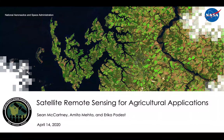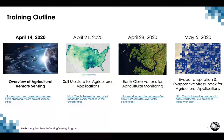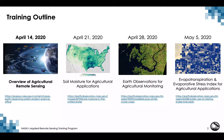On behalf of the entire ARSET team, we want to welcome you to Part 1 of the introductory webinar, Satellite Remote Sensing for Agricultural Applications. Wherever you are joining us from, we hope you are staying safe and healthy. Today is the first part of a four-part introductory webinar series running every Tuesday starting today through May 5th. The series will focus on data products, data access, and case studies on how remote sensing can be used for decision-making among the agriculture and food security communities. Today's webinar will provide an overview of agricultural remote sensing, focusing on the history, platforms and sensors, and applications of space-based Earth observations for agriculture and food security.